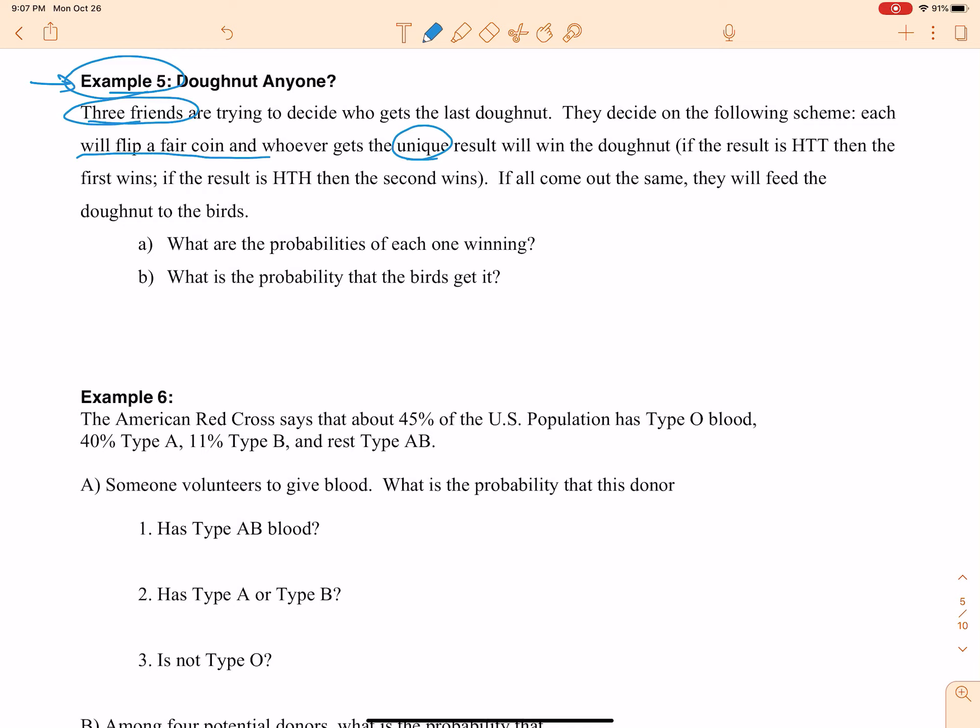So if the result is HTT, then the first one wins. If the result is HTH, then the second wins. If all come out the same, they're going to feed that donut to the birds. I don't think birds need to be eating all that sugar and fat, but that's beside the point.